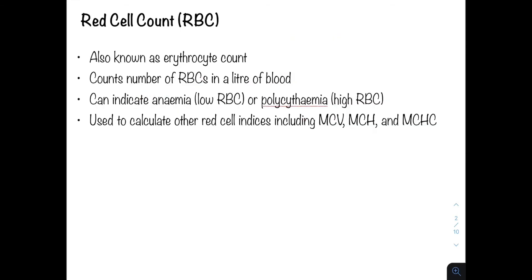Let's start with the red cell count. This is also known as the RBC or the erythrocyte count. It defines the number of red blood cells in a litre of blood. A low red cell count might suggest anemia, whereas a high red cell count might suggest polycythemia. We will come to discuss anemia and polycythemia later in this series.